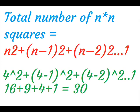On applying n equal to 4 on the above formula, we get 4 square plus 3 square plus 2 square plus 1, which on total is equal to 30.